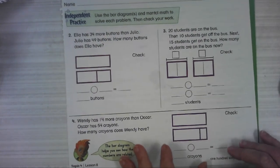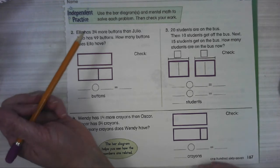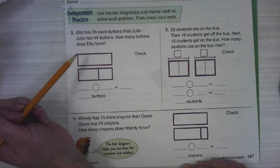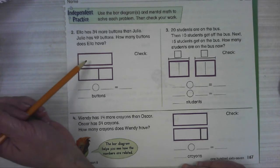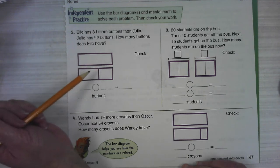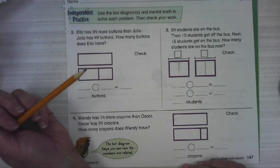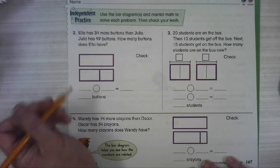All right. Let's see what we're going to practice independently. We're going to use bar diagrams and mental math to solve each problem. If this is not clicking for you and you have a better way, just do it over here. Let me see it. And we can keep talking about this.